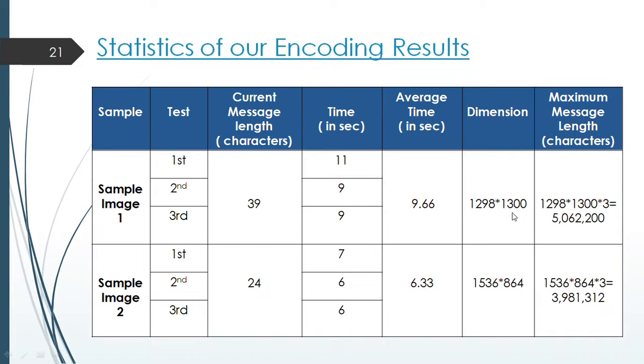This is the statistics of our encryption algorithm. We have used two sample images with three tests each. First we have used a message with 39 characters long. And the average time for running the algorithm is 9.66 seconds. The dimension of the first image is 1291 by 1300 pixels. This gives us the maximum number of characters that can be encoded inside the image. That is 5,062,200 characters.